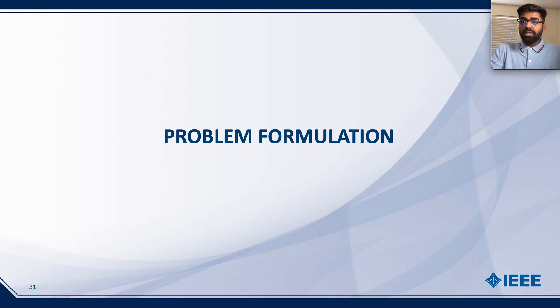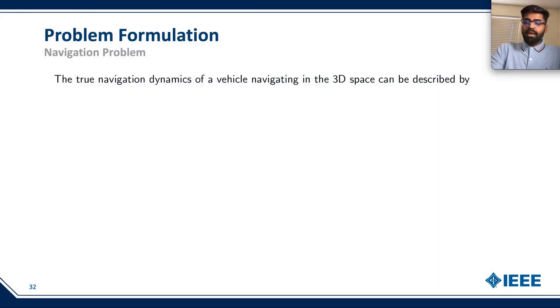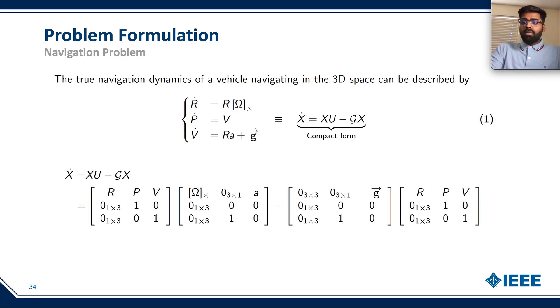Now let's talk about the problem formulation. The true navigation dynamics of a vehicle navigating in 3D space can be described by the following formula, where the left side denotes the detailed dynamics of the navigation problem, while the right side denotes the compact form of the navigation problem. The compact form can be represented using this equation. R denotes the orientation, P denotes the vehicle's position, and V denotes the linear velocity of the vehicle.